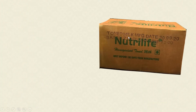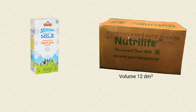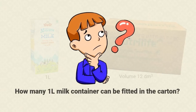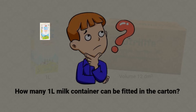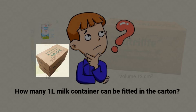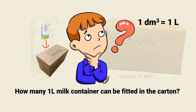Hi students! Let's start this lesson with a question. This is a neutralized carton and it has a volume of 12 cubic decimeters, and this is a neutralized milk container with a volume of 1 litre. So how many 1 litre milk containers do you think this milk carton will be able to fit? To explain this we have to understand the relation between volume and capacity.